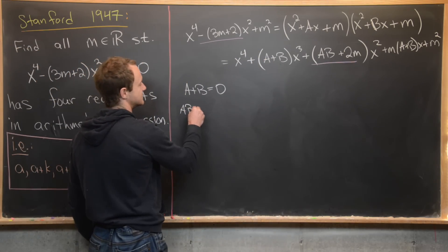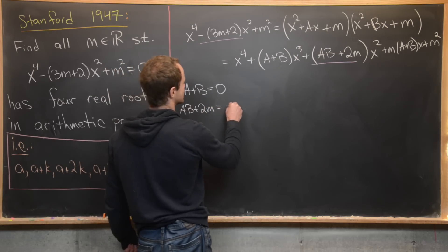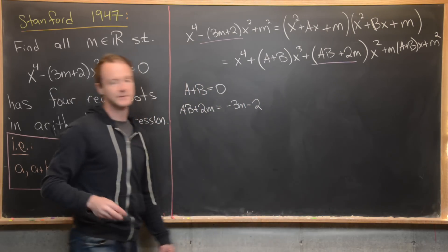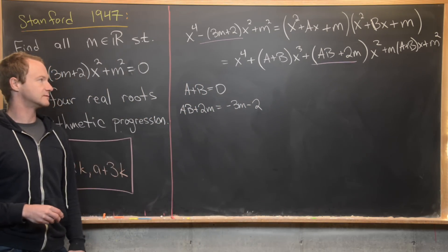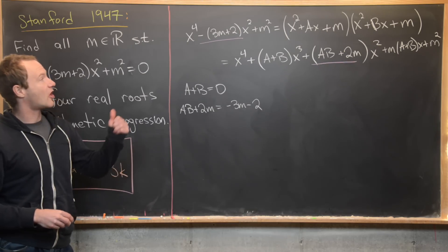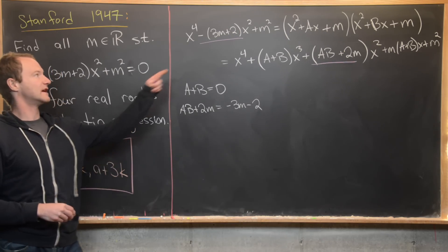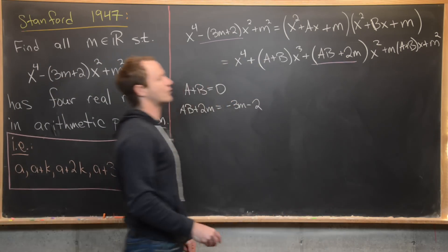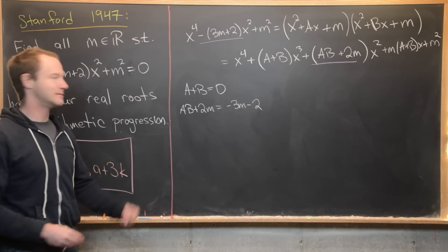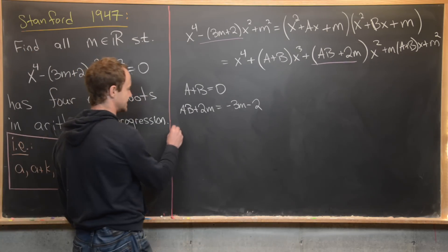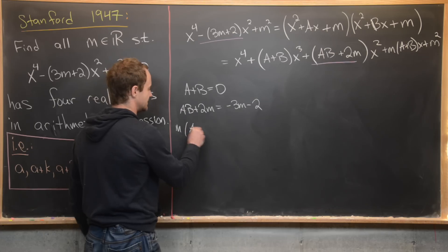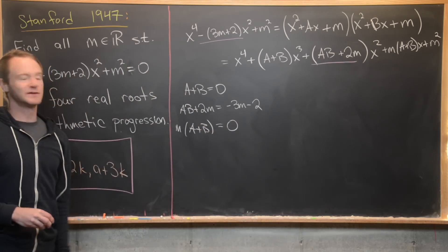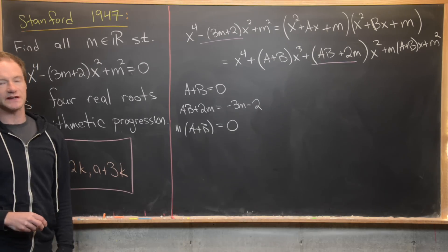So ab + 2m = −3m − 2, which we can rearrange. Also, there are no linear terms on the left, so m(a + b) = 0. This gives us our system of equations.